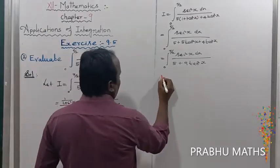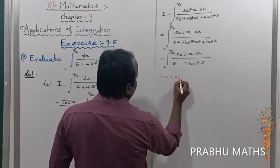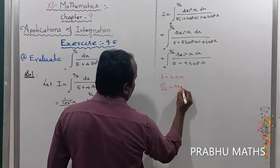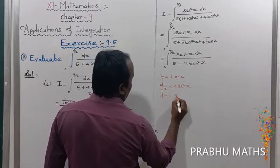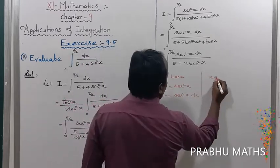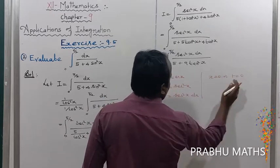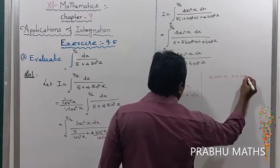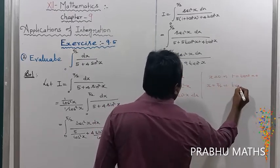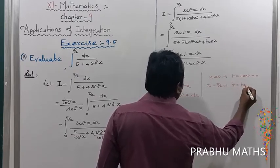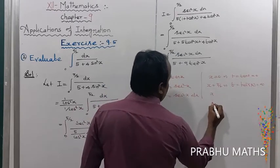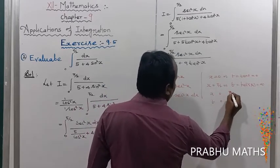Let t equal tan x. Differentiating, dt/dx equals sec²x, so dt equals sec²x dx. Applying limits: when x equals 0, t equals tan 0 equals 0; when x equals pi/2, t equals tan(pi/2) which equals infinity. So the limits transform from [0, pi/2] to [0, infinity].